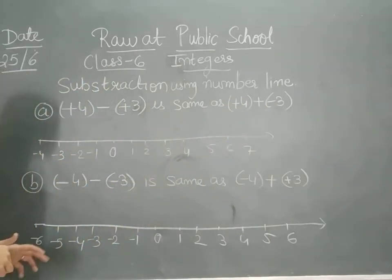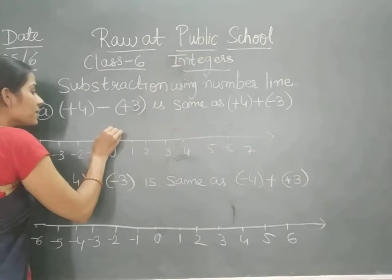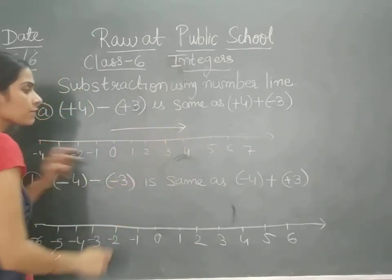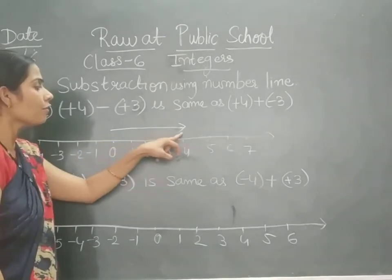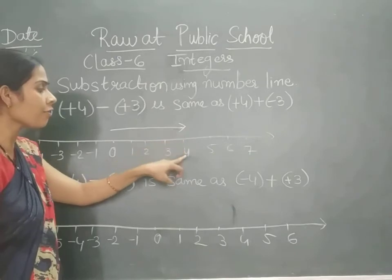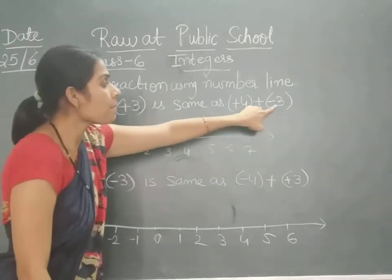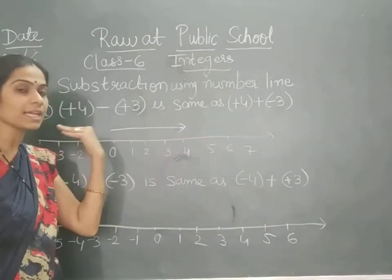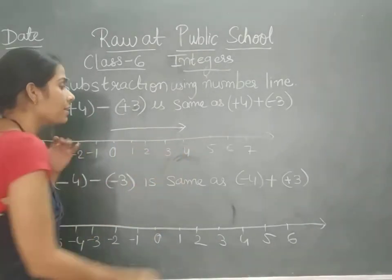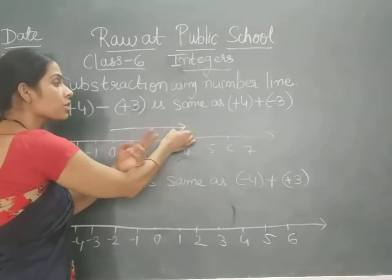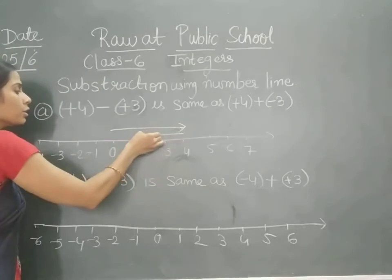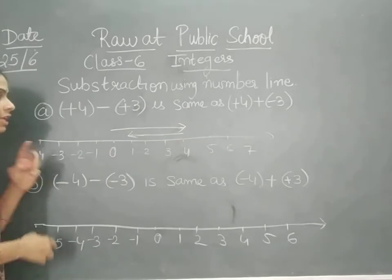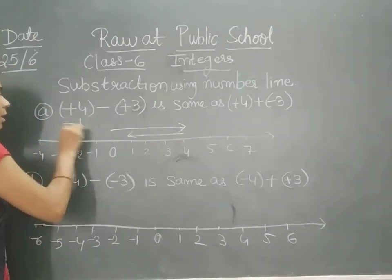So now the first step: plus 4. Plus 4 means from 0 we will take the arrow till 4, so we have started from 0 and reached 4. Now it is minus 3, so we have to move to the negative side, that is the left side. From here we will move 3 positions to the left — 1, 2 and 3. So where have we reached? We have reached 1. So here the answer is 1.